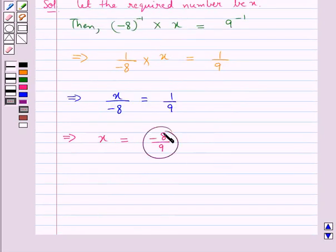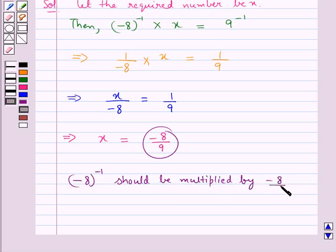So this is the required number. That is, (-8)^(-1) should be multiplied by -8/9 so that the product becomes 9^(-1).